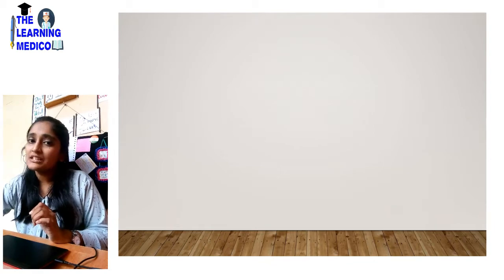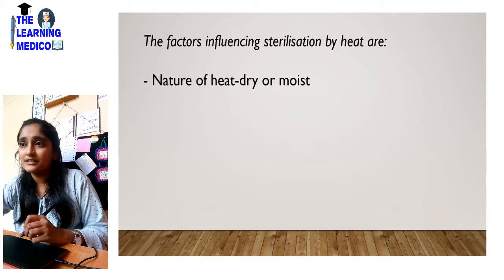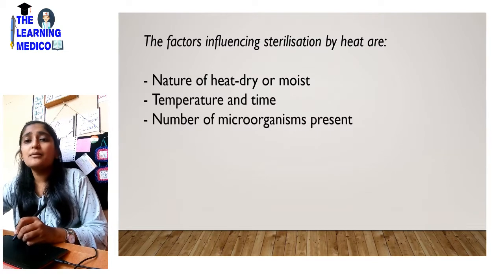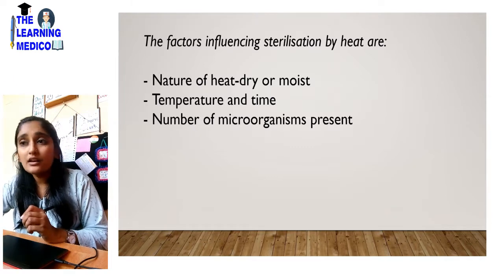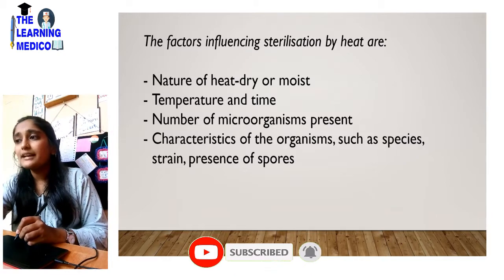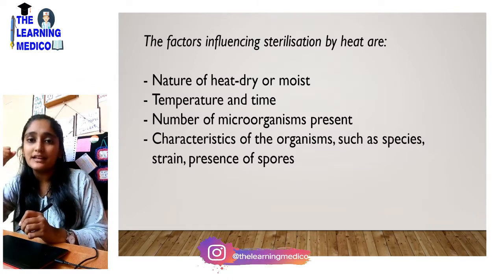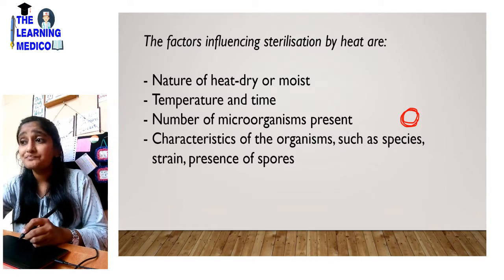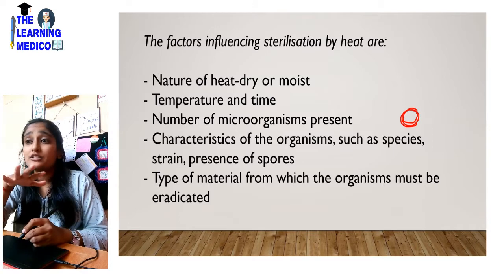There are two types of heat: dry heat sterilization and moist heat sterilization. Key factors include the number of microorganisms present in the instrument being sterilized, and the characteristics of the organism, such as species, strain, and presence of spores. Vegetative organisms are quickly killed, but spores are highly resistant because they have a very strong outer shell. The type of material from which the organism has to be eradicated also matters.